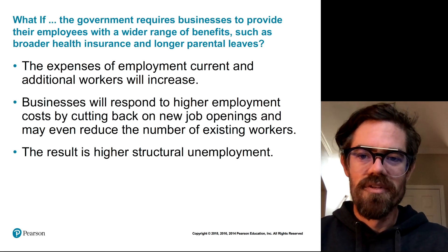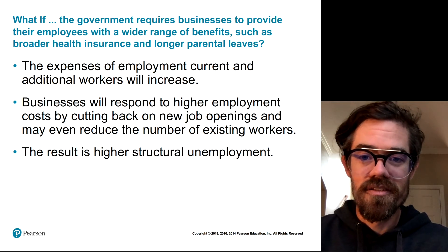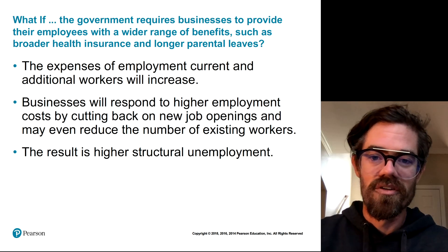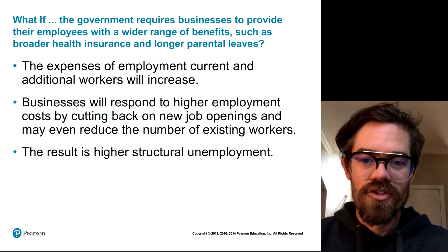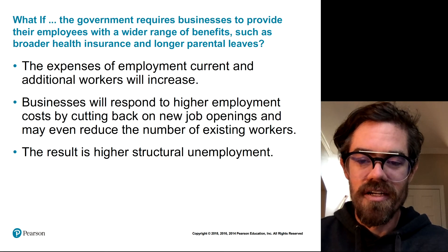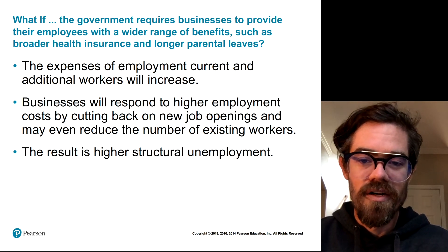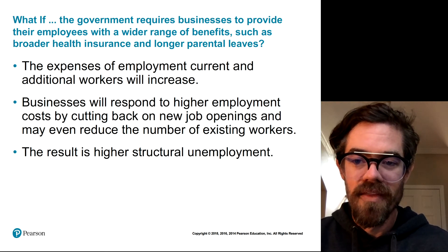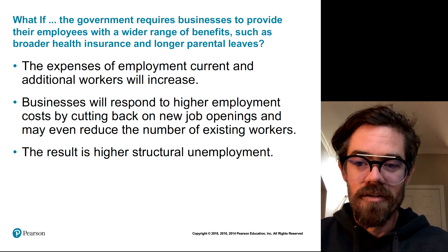Consider a what-if situation: what if the government required businesses to provide employees with a wider range of benefits, such as broader health insurance and longer parental leave? These are the types of policies that Bernie Sanders is fighting for — Medicare for All and parental leave. We have to think about what that might do to unemployment. It would create higher expenses of employment for current and additional workers. Businesses would respond by cutting back on new job openings and may even reduce existing workers by laying them off or firing them. The result would be structural unemployment, coming from a business regulation.